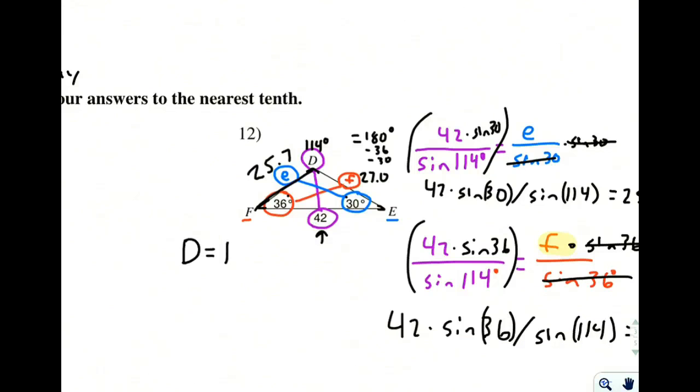we would say that D, angle D, is equal to 114 degrees, side E is equal to 25.7, and side F is equal to 27.0.